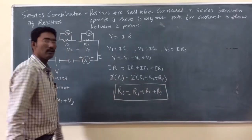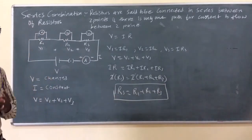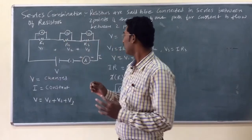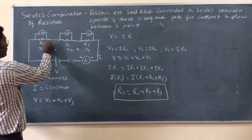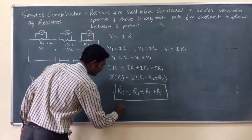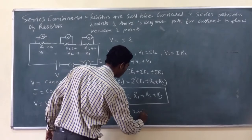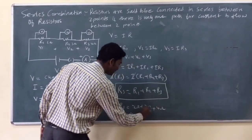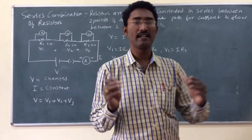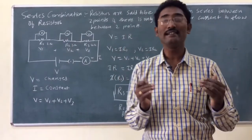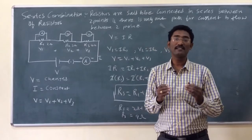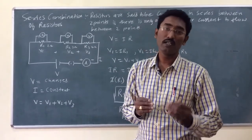So here what we can see is when the resistors are connected in series, the sum of the values of the resistances increases. For example, if the value of the first resistance is 2 ohms, the second is 3 ohms, and the third is 4 ohms, then the effective resistance RS will be 2 plus 3 plus 4, that is 9 ohms. So whenever the resistors are connected in series, they get added up. When the resistances get added up, the effective resistance increases, and therefore the value of the current flowing through the circuit decreases.